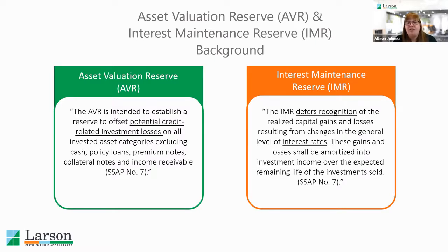On the flip side, you have the Interest Maintenance Reserve. This is meant to help offset movement in the market and interest rates in general. What it does is defer the recognition of any realized gain or loss, takes it out of the income statement in that given year, and it's amortized over time. The real intent with the Interest Maintenance Reserve, which we'll refer to as IMR, is to discourage insurance companies from buying and selling their investments just to make money based on the current market. They want them to hold on to those because they have long-term liabilities that they want to make sure are funded.